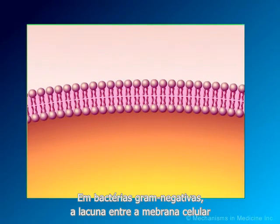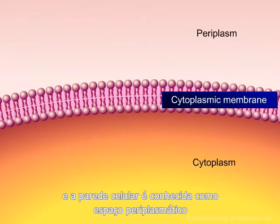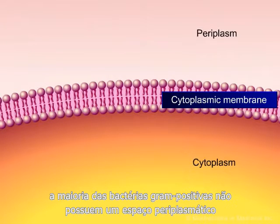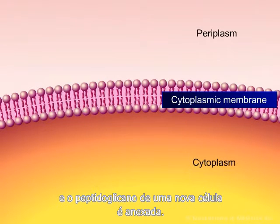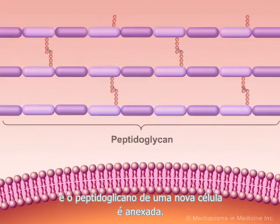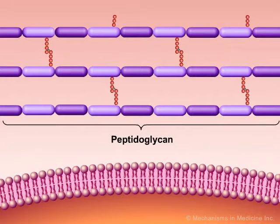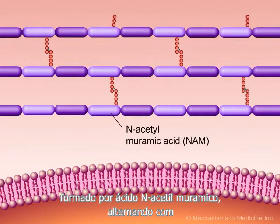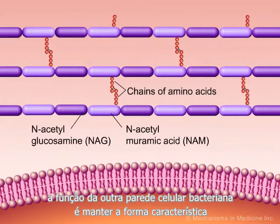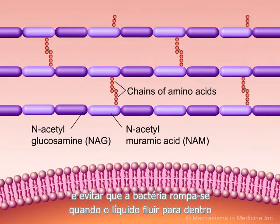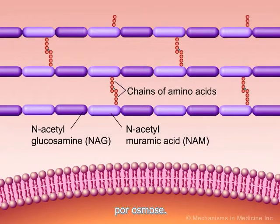In gram-negative bacteria, the gap between the cell membrane and the cell wall is known as the periplasmic space. Most gram-positive bacteria do not possess a periplasmic space but have only periplasm, where metabolic digestion occurs and new cell peptidoglycan is attached. Peptidoglycan, the most important component of the cell wall, is a polymer made of N-acetylmuramic acid alternating with N-acetylglucosamine, which are cross-linked by chains of four amino acids. The function of the bacterial cell wall is to maintain the characteristic shape of the organism and to prevent the bacterium from bursting when fluid flows into the organism by osmosis.